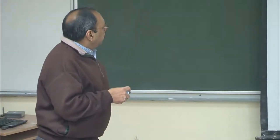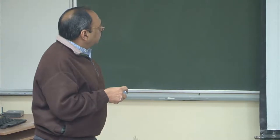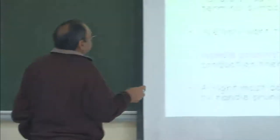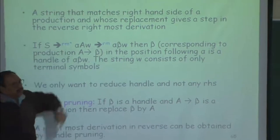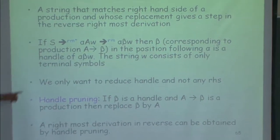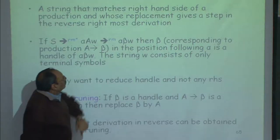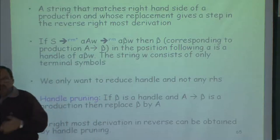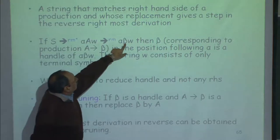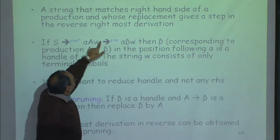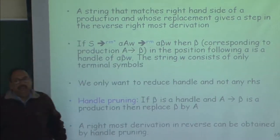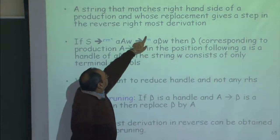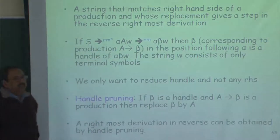Notation-wise, we are saying that the start symbol in some steps of rightmost derivation gives a sentential form alpha A w, where w is a string of terminals, alpha is a string of terminals and non-terminals, and A is a non-terminal. Then one more rightmost derivation gives a pattern alpha beta w, meaning there is a production A goes to beta. If I find such a pattern and beta is a handle, I can reduce beta to A — this is a step in the reverse of rightmost derivation. The aim is to keep finding such handles starting from w and eventually reach the start symbol.